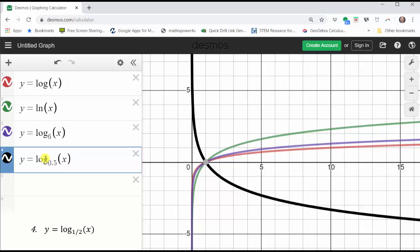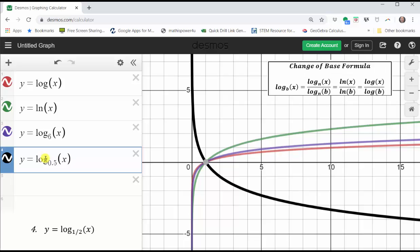But the problem with that is, if we had a fraction like 1 3rd, we would have to round 1 3rd to approximately 0.33, or something similar to that. And therefore, the graph would not be 100% accurate. So when the base of the log is a fraction, it might be better to use the change of base formula.